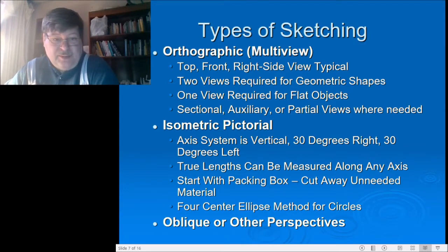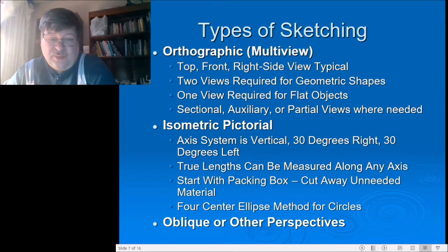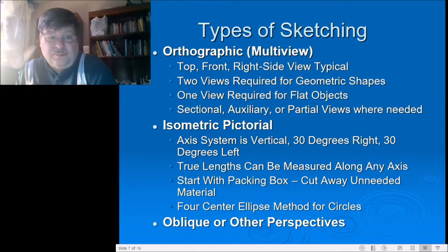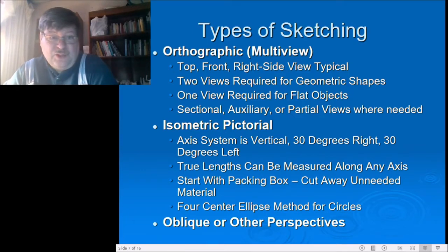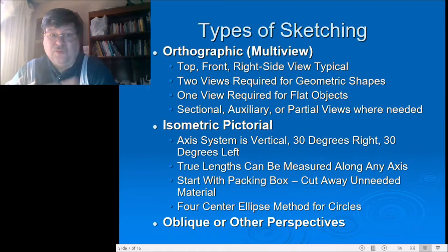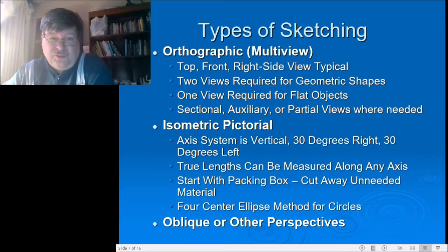Isometric pictorial — that's the other type of view. An isometric pictorial is a three-dimensional representation of a three-dimensional object. It's not a perfect perspective — not what you'd call a true human perspective. Human perspective is what a part looks like with two eyes looking at it; you're actually getting two views and your mind puts those together into a three-dimensional-looking object instead of a flat one.